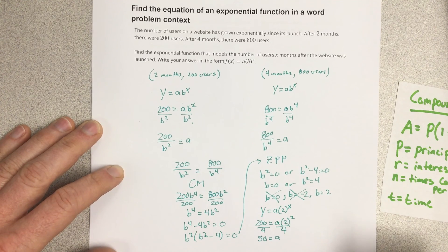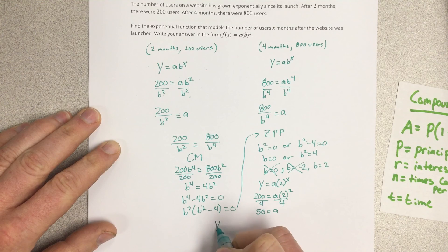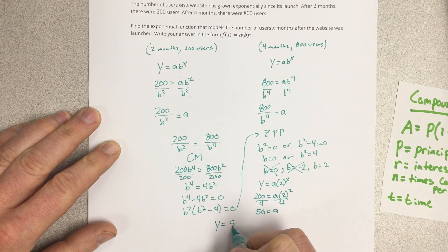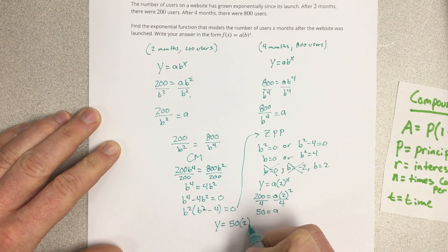So the equation I've got would be y equals 50 times 2 to the x power.